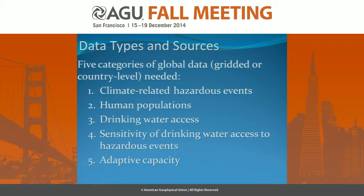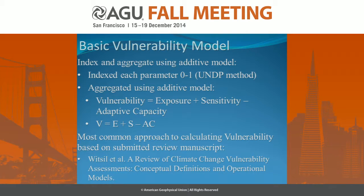To do this analysis, we needed five categories of global data: data on climate-related hazardous events (flood, drought, and cyclone), human populations, population density, drinking water access, the sensitivity of that drinking water access to flood, drought, and cyclone, and adaptive capacity data. The model that we built is based on a review of vulnerability literature — a review manuscript that's actually in review right now.